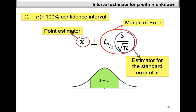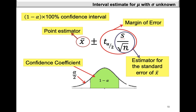From the graph, we can see that the shaded area is the confidence coefficient and it's equal to 1 minus alpha. Alpha is the level of significance, so the unshaded areas are equal to the level of significance. Because of symmetry, either tail is equal to alpha over 2. The lower t value is minus t-alpha-over-2 with n minus 1 degrees of freedom, and the upper value will be t-alpha-over-2 with n minus 1 degrees of freedom.